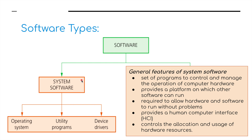If we break down system software, the general features are: it is a set of programs to control and manage the operation of the computer hardware. It provides a platform on which other software can run, is required to allow hardware and software to run without problems, provides a human-computer interface (HCI), and controls the allocation and usage of hardware resources.